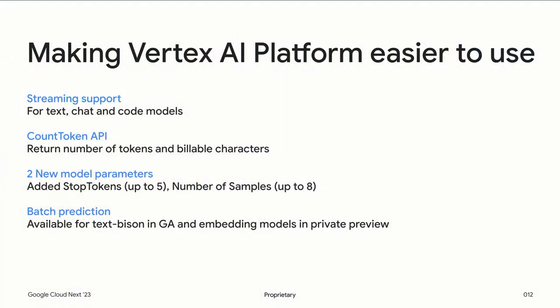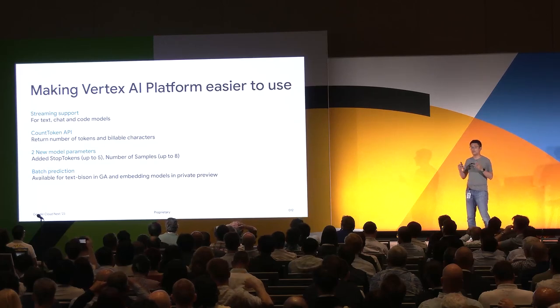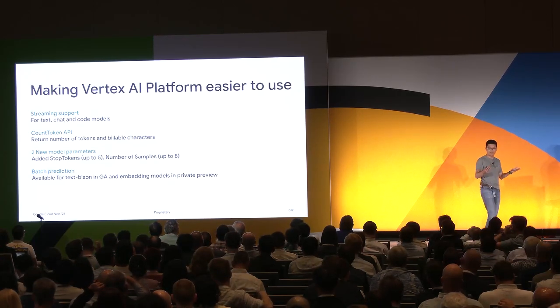Second, we're making our platform even easier to use. We added a streaming feature now supporting text, chat, and code models. With the count token API, you can count the number of tokens and billable characters before calling our prediction endpoint. We added two more model parameters — stop tokens and number of samples — so you have more control of the model output from one single request. If you're running a non-time-sensitive job, batch prediction is the way to go. We can support up to a hundred thousand prompt tasks in one single request, with plans to expand to one million prompts.